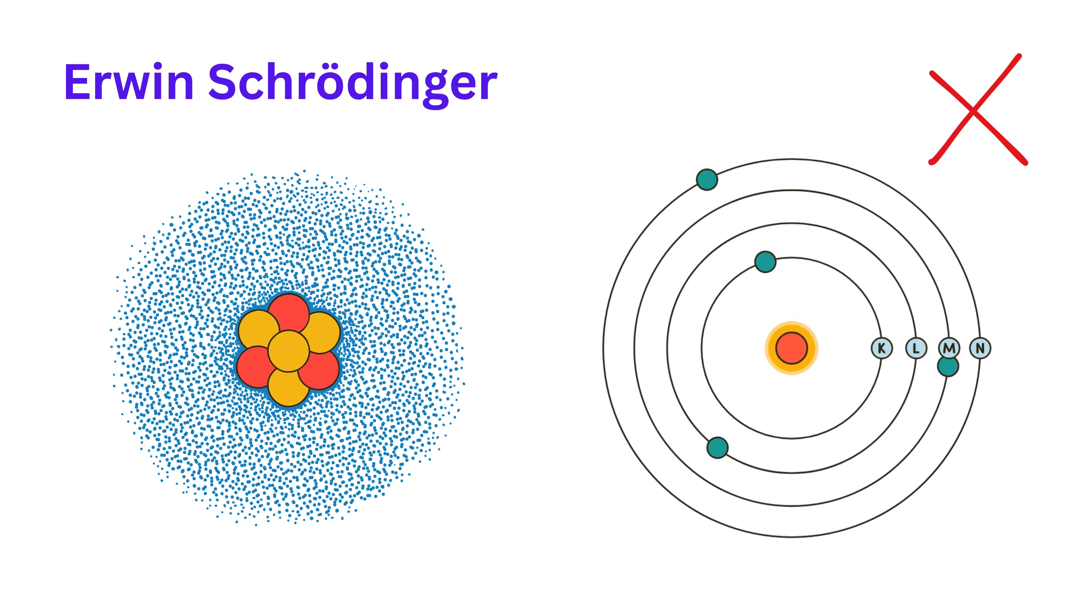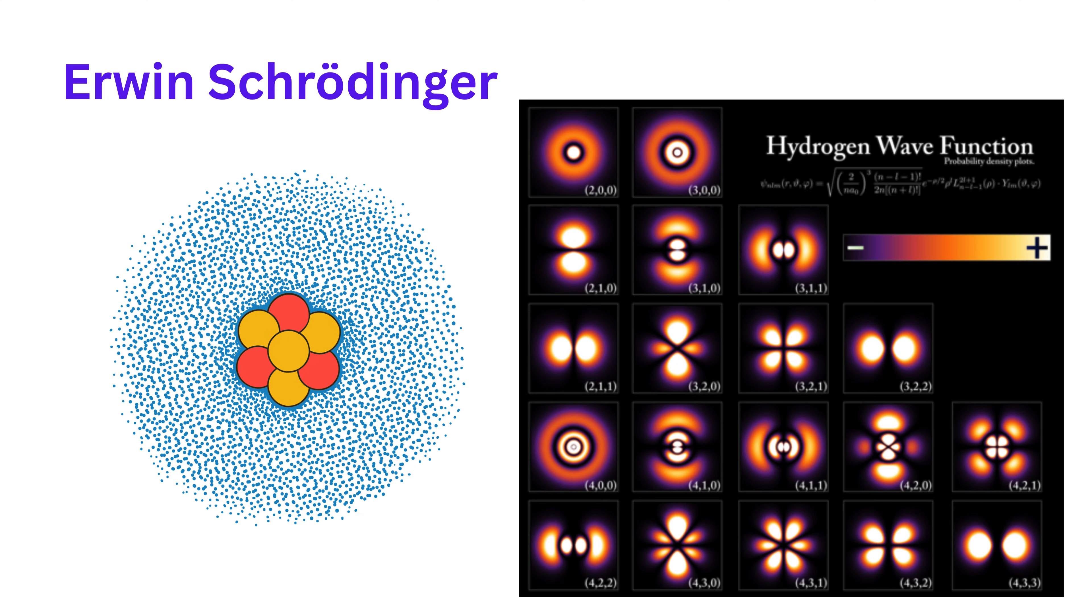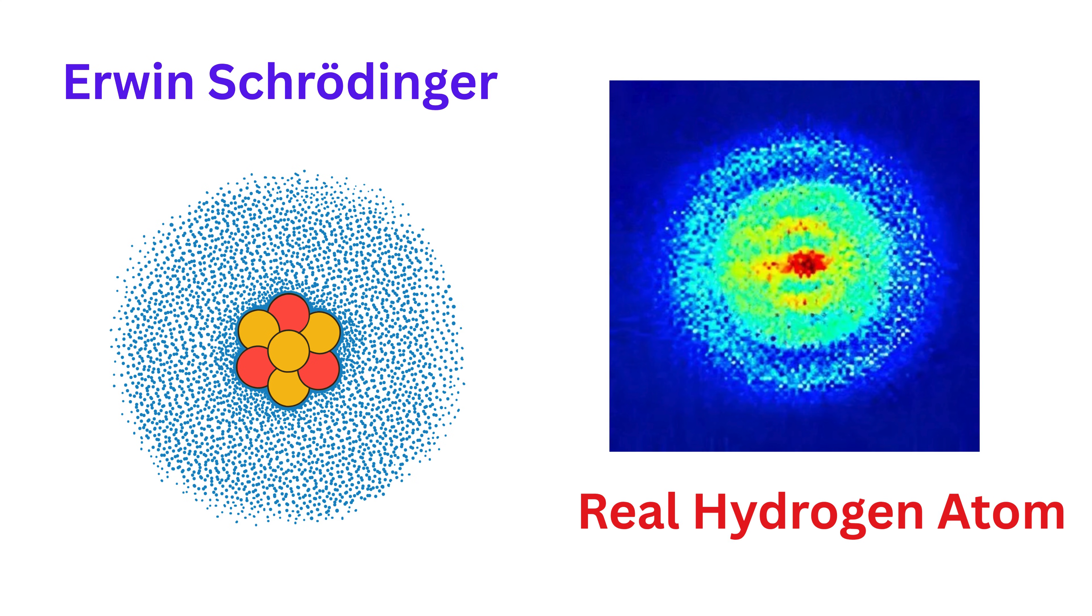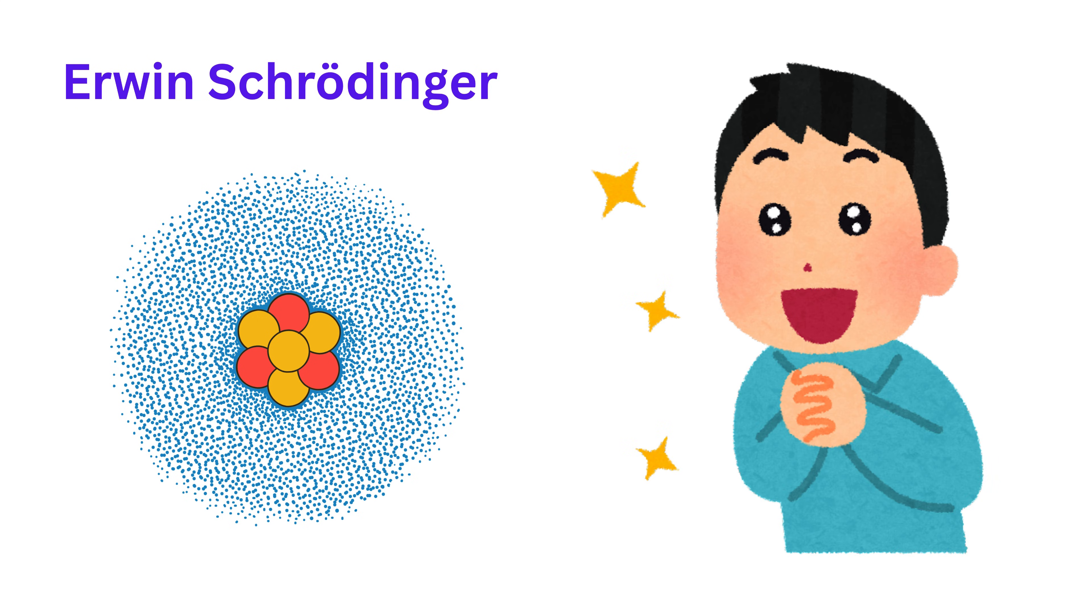In this model, we no longer talk about circular or elliptical orbits. Instead, we talk about orbitals. An orbital is a region in space where the chance of finding an electron is the highest. It's not a clear path like a road, but more like a cloud where the electron is probably hiding. This is how our understanding of atoms grew.